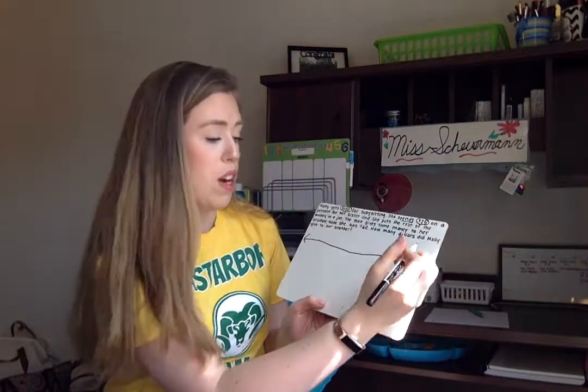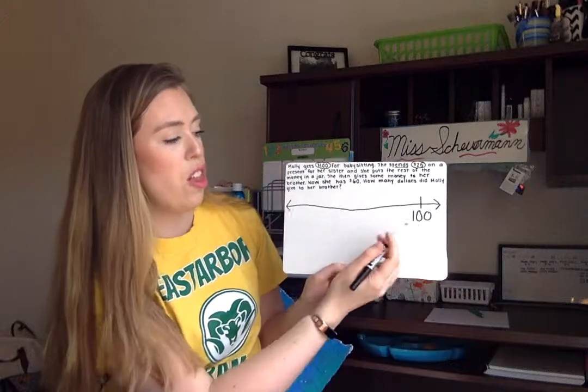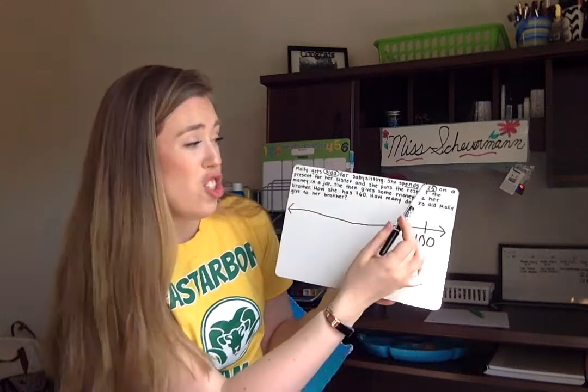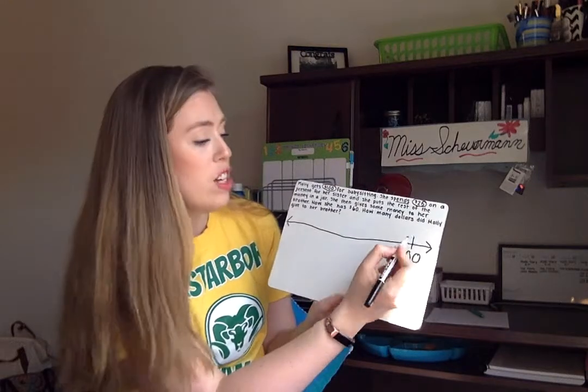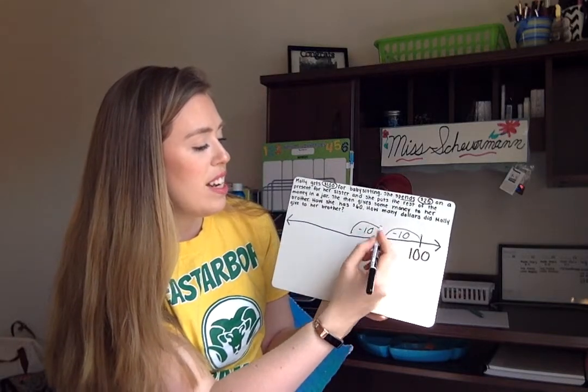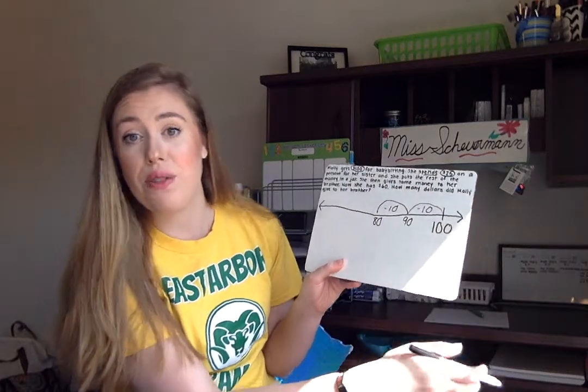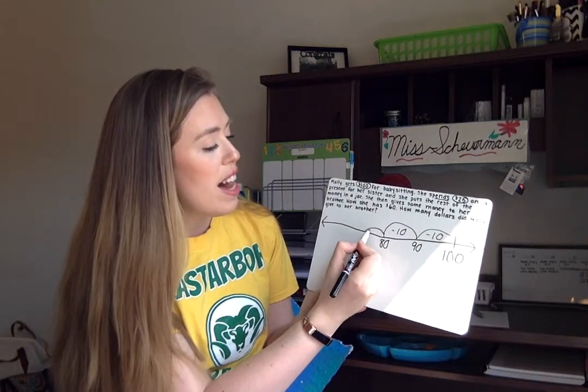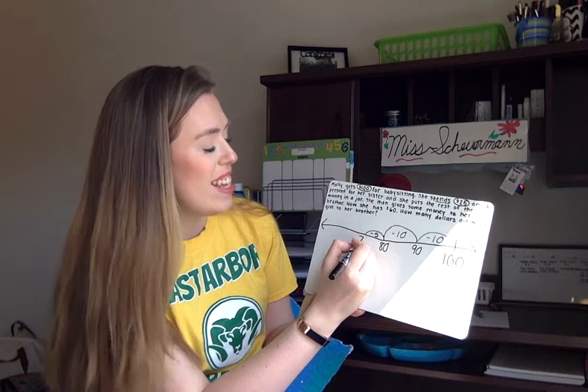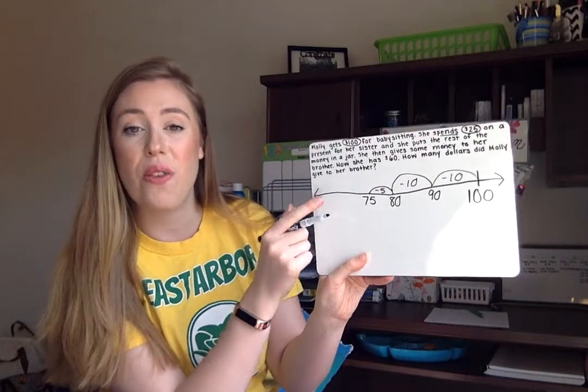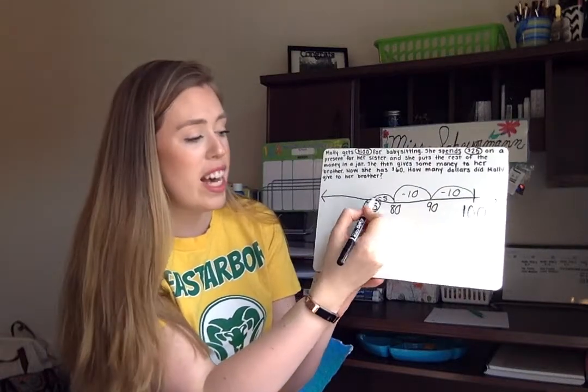That was method number one with our place value blocks. Let's see what this problem looks like solved using an open number line. We start with $100. We know she spent money, so we need to subtract — jump backwards on the line. We put 100 on the right side. She spent $25, so we jump back 25: two jumps backwards of 10. 100 minus 10 is 90, 90 minus 10 is 80. Then one jump backward of five: 80 minus 5 is 75. Step one done — she started with $100, spent 25, so right now she has $75 left.